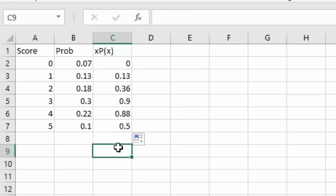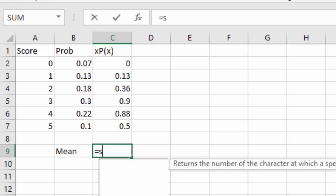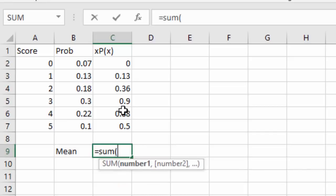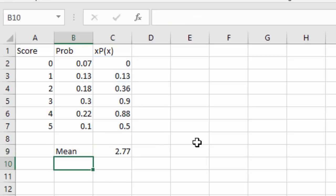Now, if I want the mean or expected value, I just have to add all those xP(x)'s. So we'll say equals the sum, open a parenthesis, and select each of those values. When I hit enter, we find our mean is 2.77.